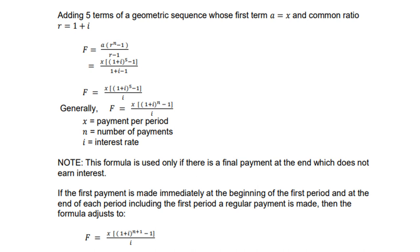If you collect your like terms, you get the future value formula, which is x[(1 + i)^5 - 1]/i. Generally, F = x[(1 + i)^n - 1]/i, where x is the payment per period, n is the number of payments, and i is the interest rate. Note, this formula is used only if there is a final payment at the end, which does not earn interest.